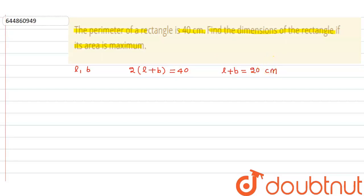Now again, it is saying find the dimension of the rectangle if its area is maximum. Now, area can be given as - if I denote area as A - so area is equal to l × b.